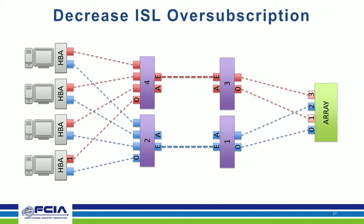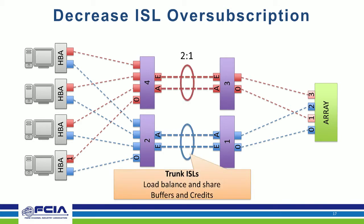When ISL over-subscription becomes too high, you add more ISLs and trunk them together. Earlier with a four-to-one over-subscription, adding a second ISL line and trunking drops it to two-to-one — a much better number. Trunking capability across vendors load-balances the ISL lines and buffer credits so the system is more intelligent about where to send IO.